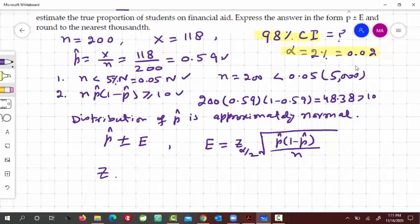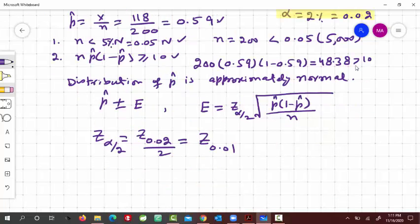So now with this alpha, z sub alpha by 2, so that is equal to z sub 0.02 by 2, so that is equal to z sub 0.01. So we make this normal distribution curve.